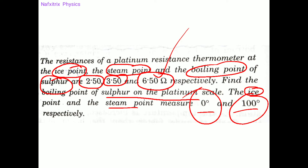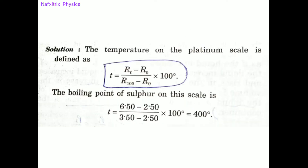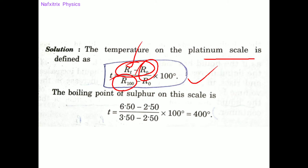The formula for temperature on the platinum scale is: T = (R_T − R_0) / (R_100 − R_0) × 100, where R_T is the resistance at temperature T, R_0 is the resistance at the ice point, and R_100 is the resistance at the steam point.